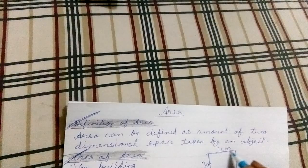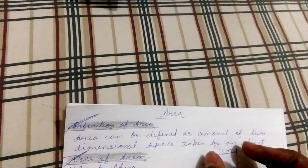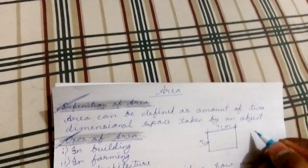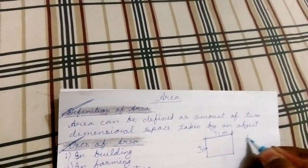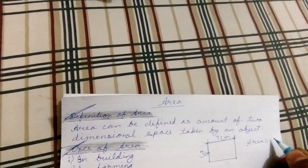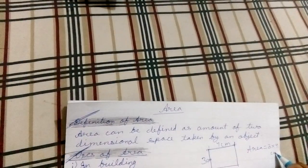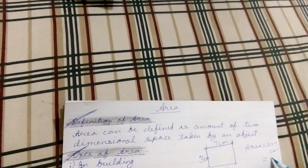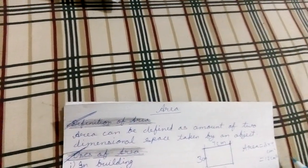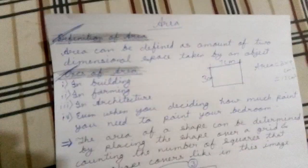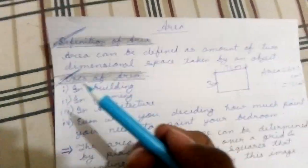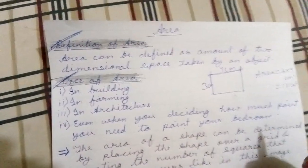Two-dimensional space, one dimension is this and the second is this. So for area we simply do 3 into 4 centimeter square, which equals 12 centimeter square. The second topic here is uses of area.